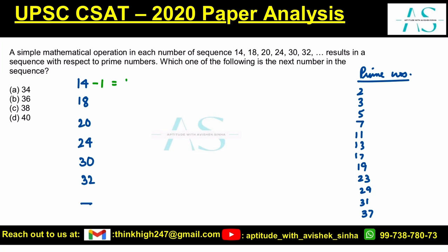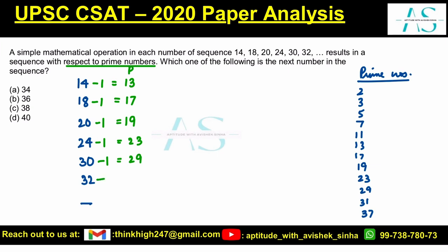14 minus 1 is 13, which is a prime number. 18 minus 1 gives 17 — again prime. 20 minus 1 gives 19 — also prime. 24 minus 1 gives 23 — also prime. 32 minus 1 gives 31 — also a prime number.